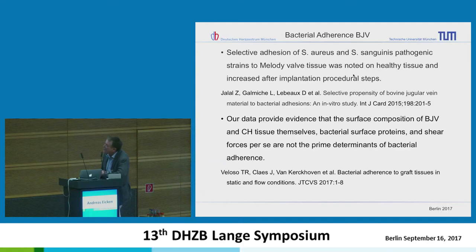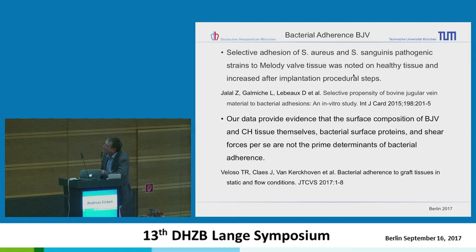On the other hand, a study from the Leuven group recently published in the Journal of Thoracic and Cardiovascular Surgery showed that the surface composition of bovine jugular vein and homograft tissue themselves, bacterial surface proteins, and shear forces per se are not the prime determinants of bacterial adherence. So there is still scientific work to be done here.